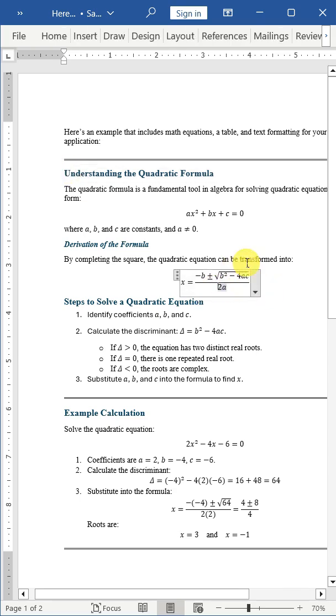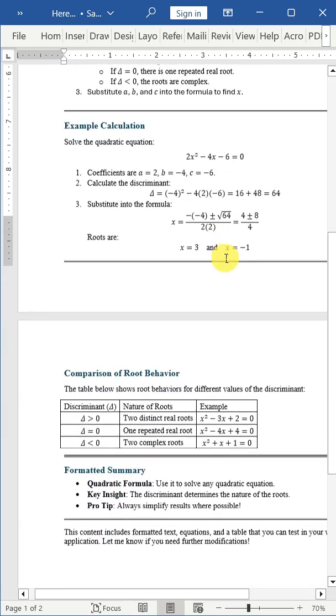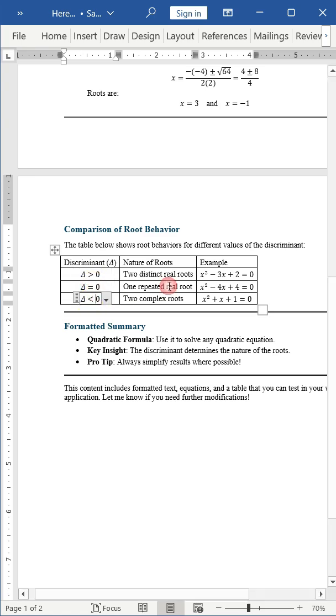And that's it! You've successfully copied content from ChatGPT into MS Word, while maintaining all its original formatting.